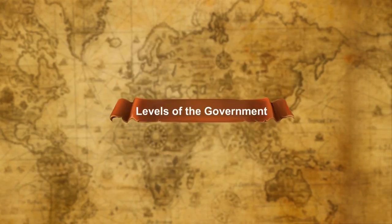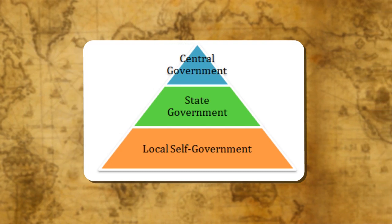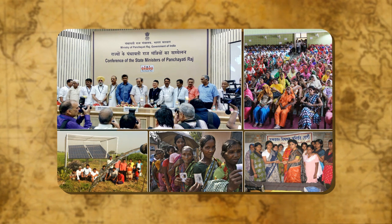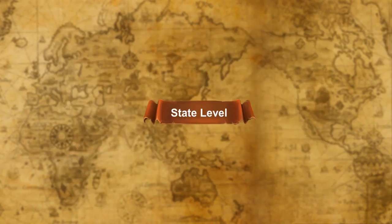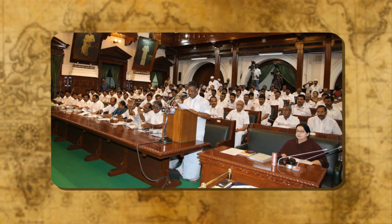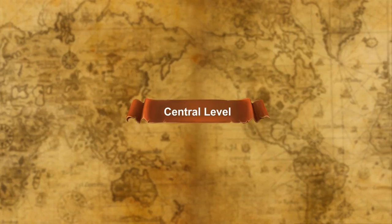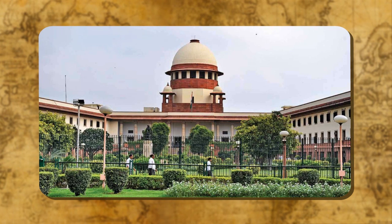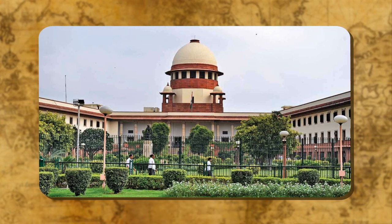The government in a country works at three different levels. Local Government: the government which works in a village or town is called a local level government. State Level: the government which works at the state level is called the state government. Central Level: the government which works at the national level and works for the welfare of the whole country is called the central government.